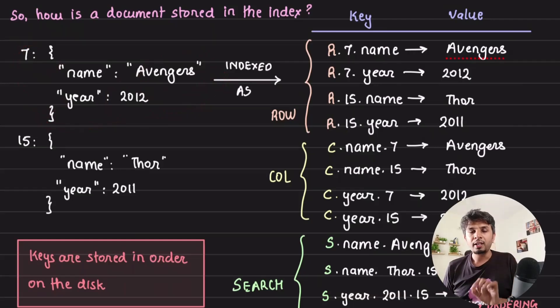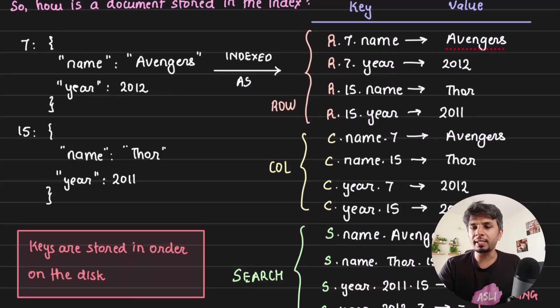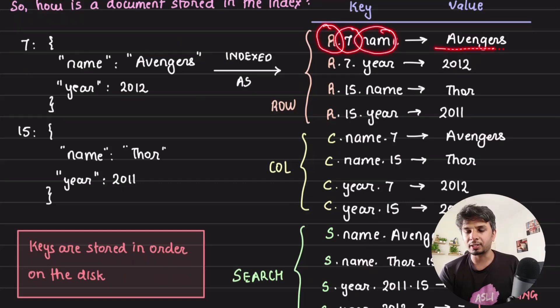This document will be stored in three different optimized ways: one is row-based, one is column-based, one is search-based. Instead of storing each document as is, it stores each attribute independently. For example, in case of row-based optimized way, it would store it as R.7.name valuing Avengers. So the row-based optimization for document with ID 7, attribute name value is Avengers, row 7 year 2012. This is row-based stuff.